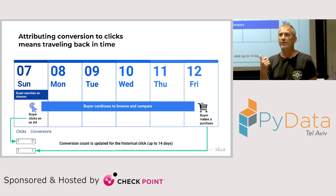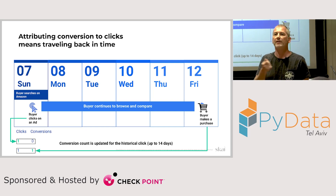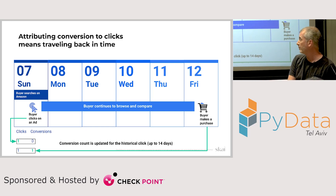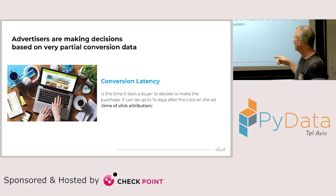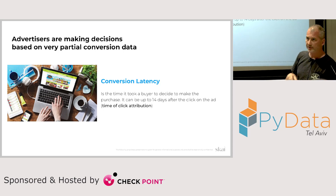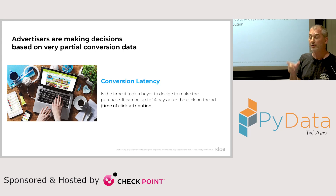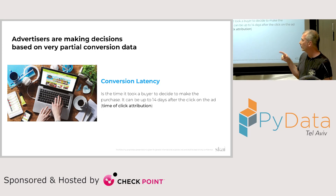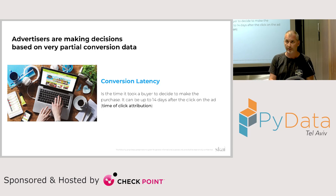The advertiser needs to decide whether to stop, activate more, increase budgets, or reduce bids, but doesn't have a good notion of campaign efficiency. This timeframe where the buyer is thinking about buying is what we call the conversion latency. For technical reasons of how the conversion is attributed to the click, there is a window of 14 days — the attribution window. During these 14 days, we want to make a prediction on what the final value of conversions and revenue will be for a given historical date.